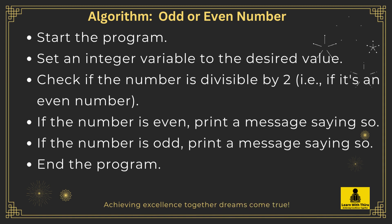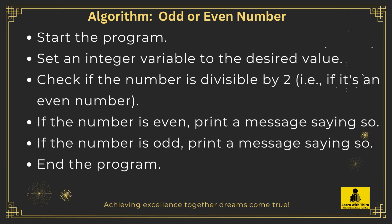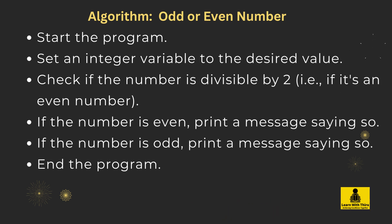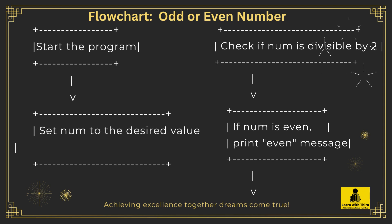Algorithm: odd or even number. Start the program, set an integer variable to the desired value, check if the number is divisible by two — i.e., if it's an even number. If the number is even, print a message saying so. If the number is odd, print a message saying so. End the program. Flowchart: odd or even number.